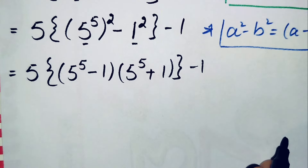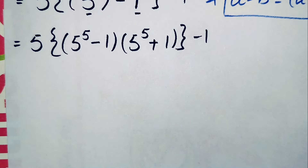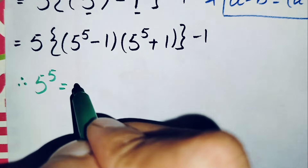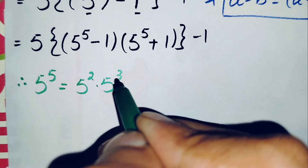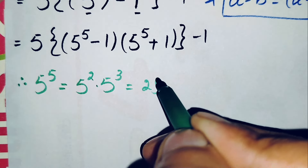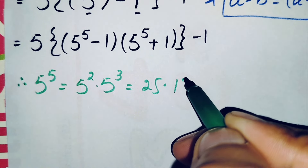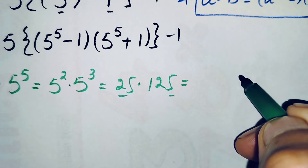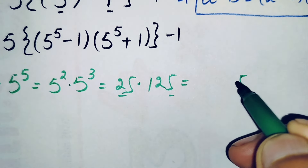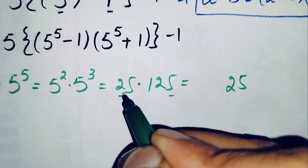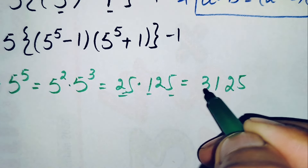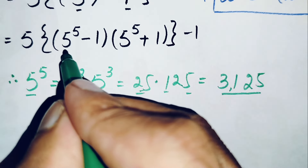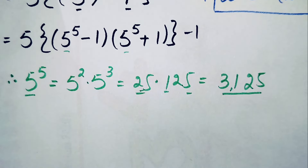Now we find the value of 5 raised to power 5. We write it as 5 raised to power 2 times 5 raised to power 3, which is 25 times 125. Multiplying 25 times 125: 25 times 5 is 125, carry 12; 25 times 2 is 50, plus 2 is 52; then 25 times 1 plus carry gives 31. So the value of 5 raised to power 5 is 3125.